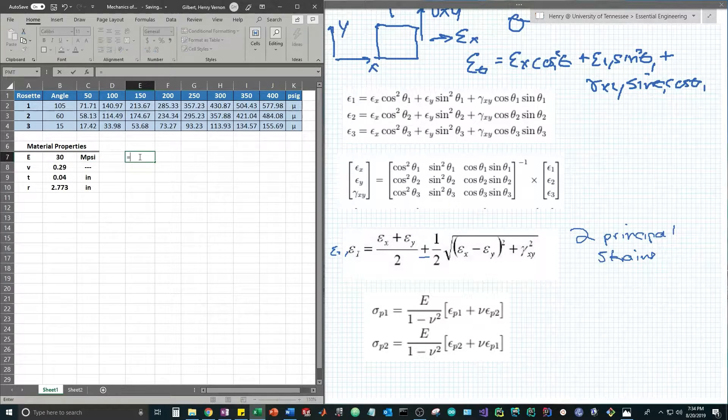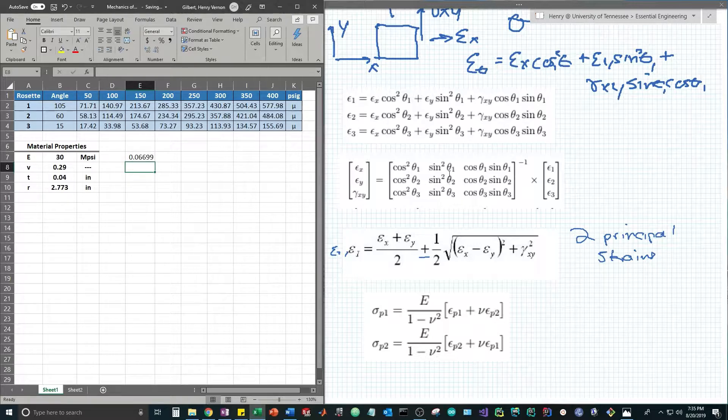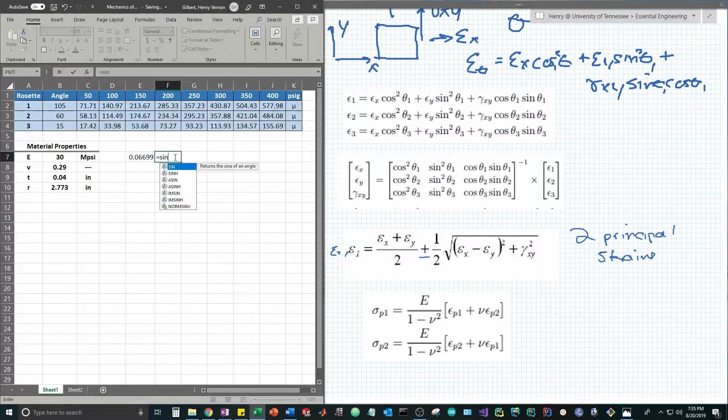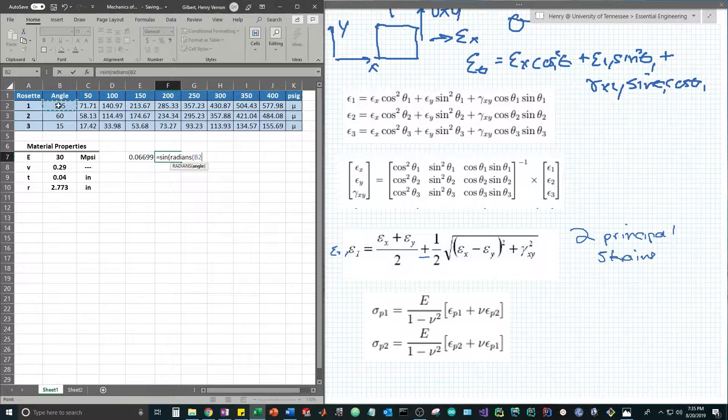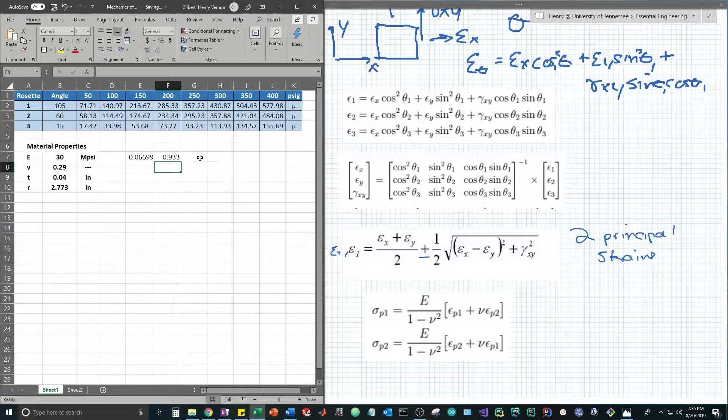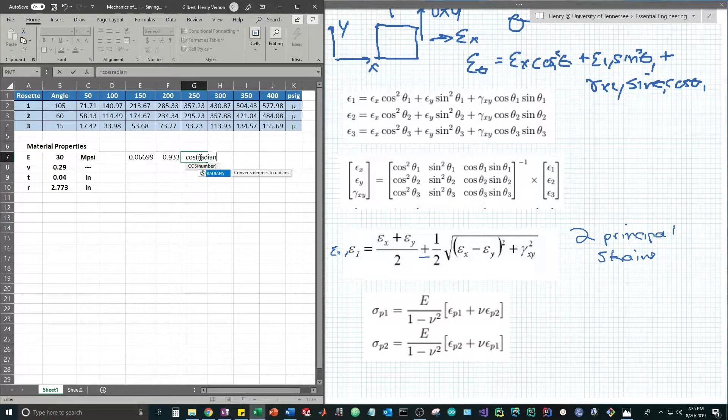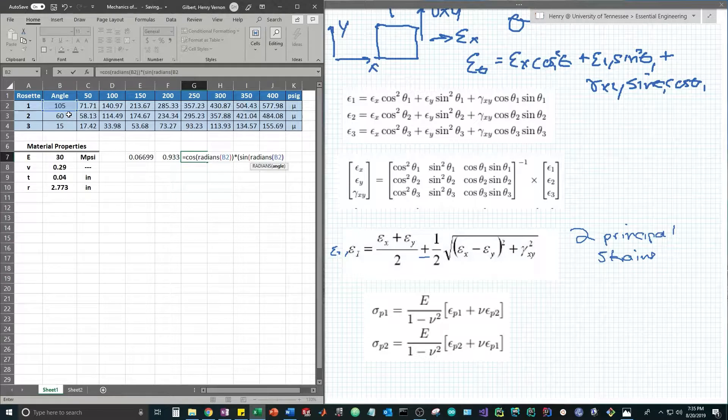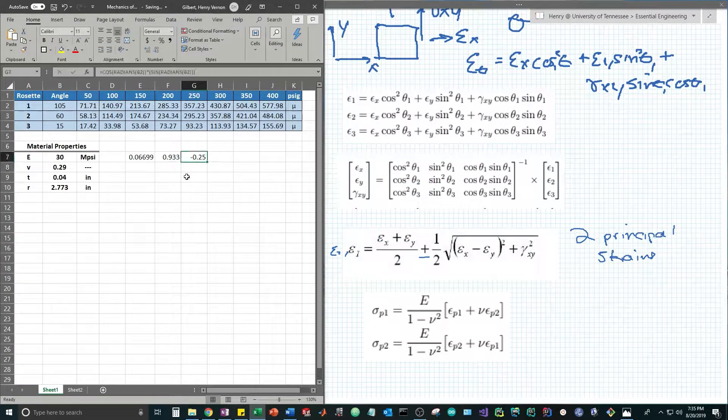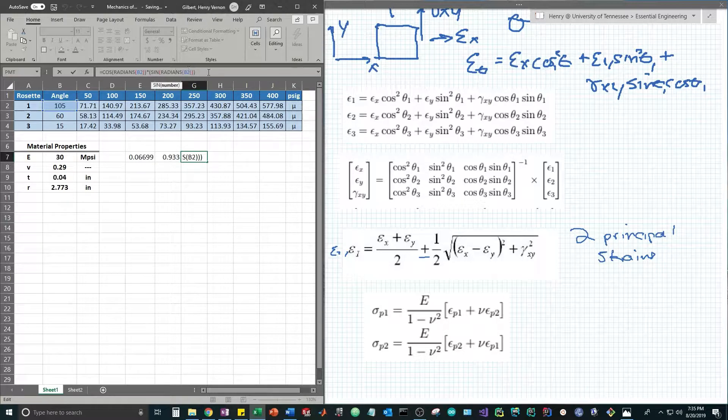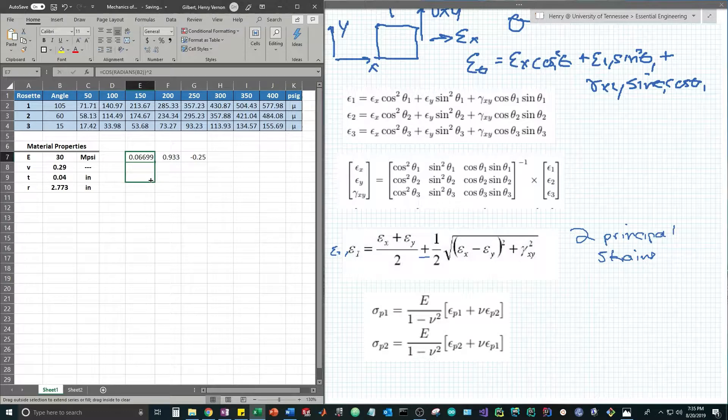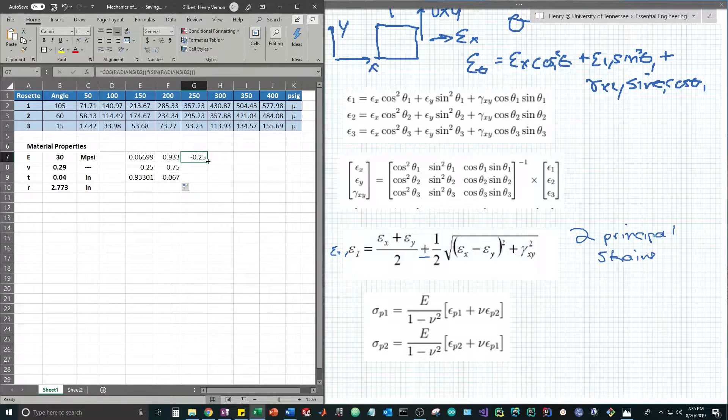This first spot in this matrix is going to be cosine squared of theta 1, so that's cosine of radians times theta 1 which is 105, all of that squared. The sine squared term in the second column is sine of radians times theta 1. The third column is cosine of radians theta 1 times sine of radians of theta 1. Remember we have to convert these degrees to radians to do it in Excel. Now we simply drop these formulas down to calculate the entire angle matrix.